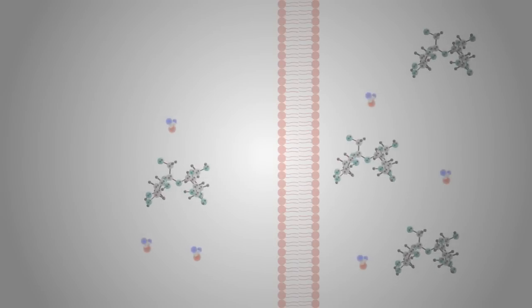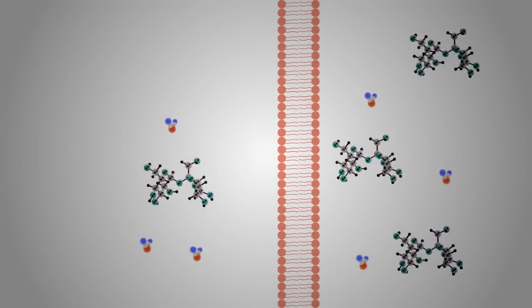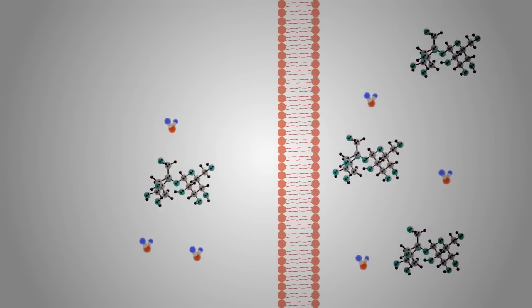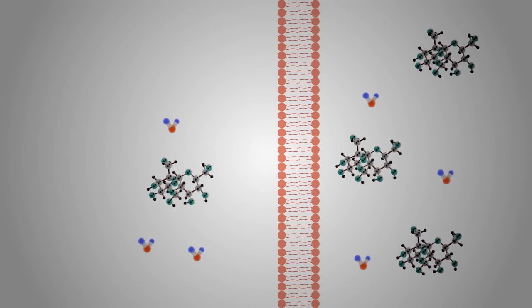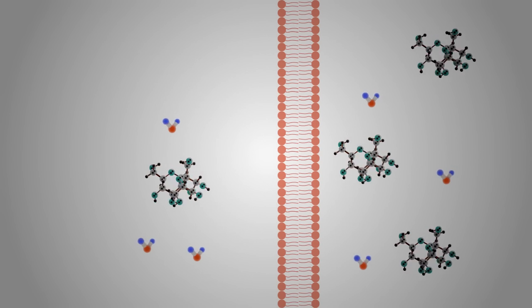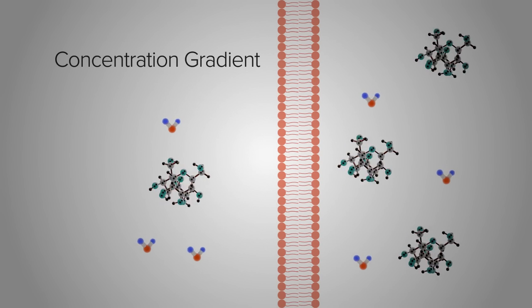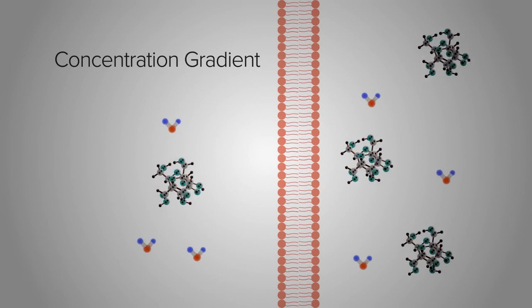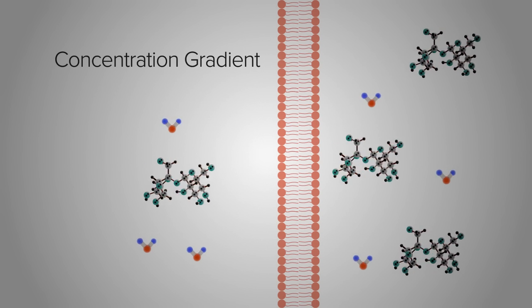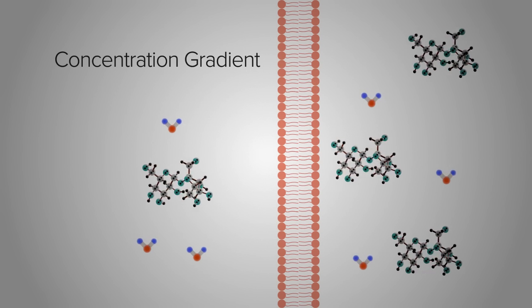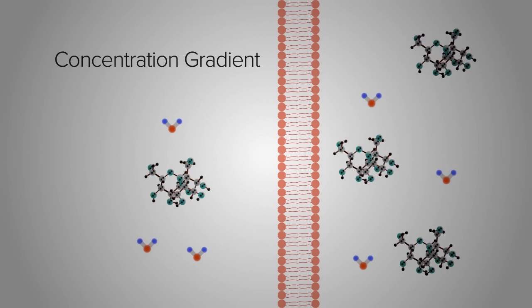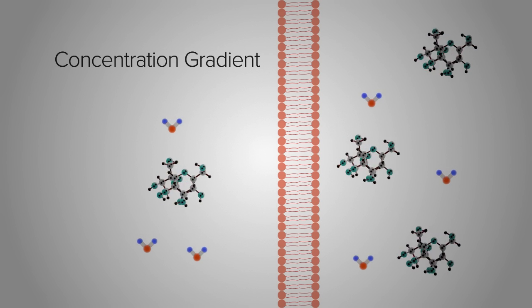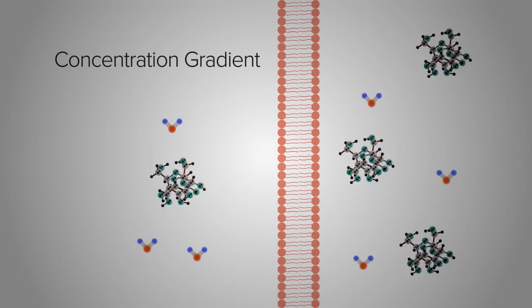The amount of solute, in our case sugar, on either side of a membrane will decide how water moves across a membrane. The difference in the amount of a molecule across a membrane is called a concentration gradient. Say we have more sugar on one side of a membrane than the other. That's a concentration gradient. The concentration gradient of a solute determines whether water will travel across a membrane.